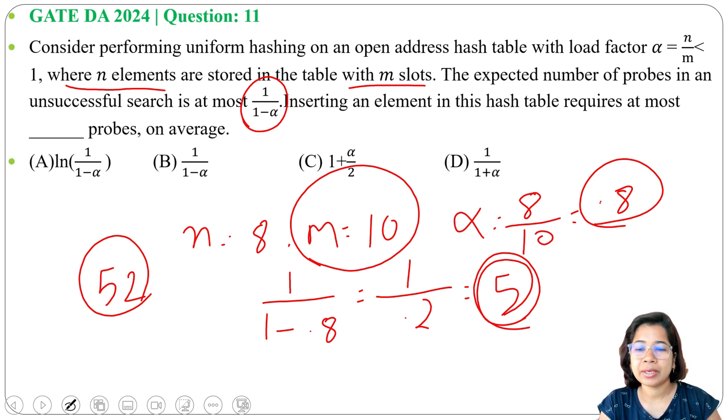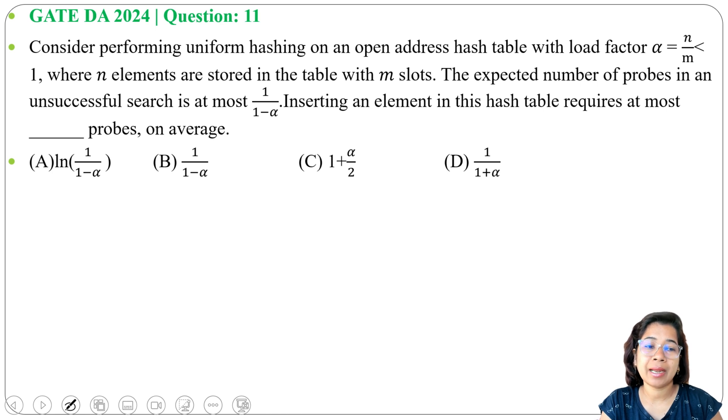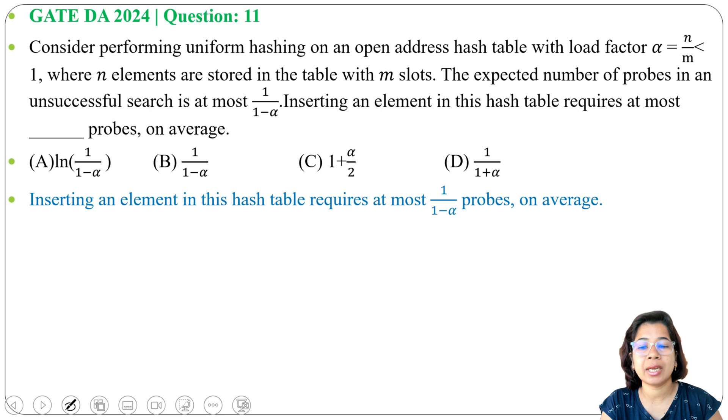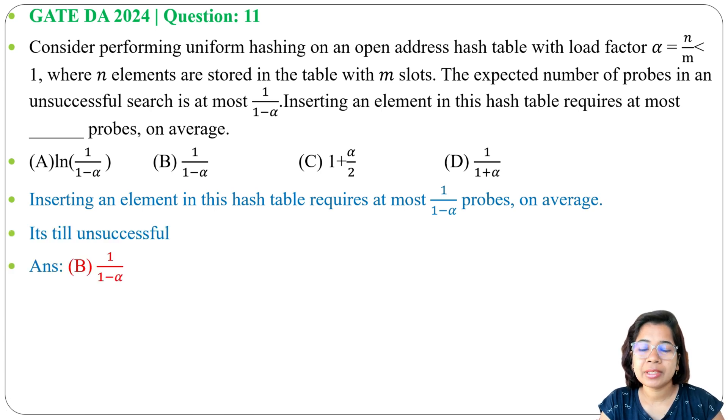So that's why answer will be 1 divide 1 minus alpha, it's present in option B. So inserting an element in a hash table requires at most 1 divide 1 minus alpha probes on average, means we need to check till we get an unsuccessful slot for inserting. This is a direct question, answer is present in this question.